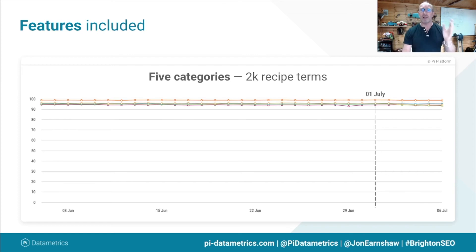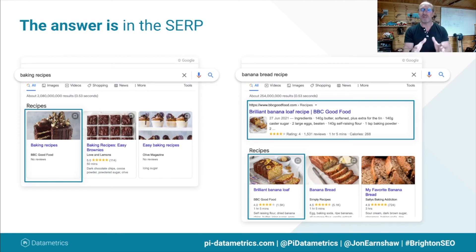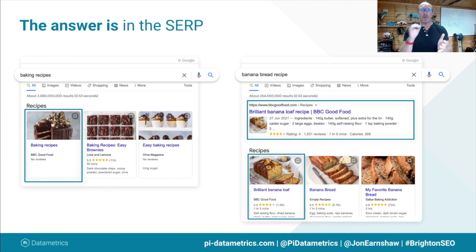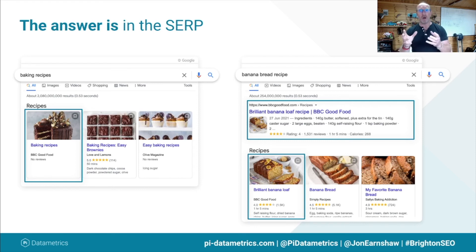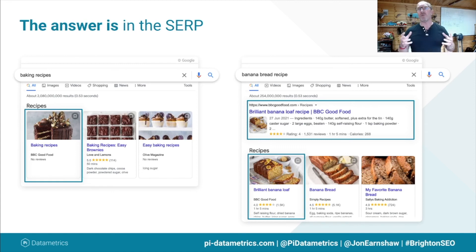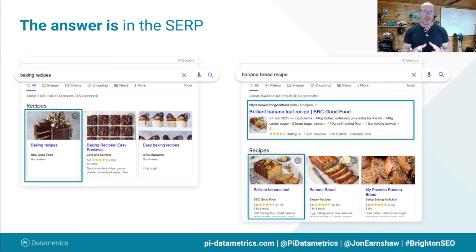Here are two screenshots of slightly different recipes — baking and banana bread. On the left, for baking recipes BBC Good Food, the organic position has been removed. On the right, the classic organic along with the recipe card. It turns out Google is on one day removing, adding, swapping — but always keeping at least one organic presence. This is SERP testing, intent testing at its finest. Don't get caught out by that — always include features when looking at your visibility and trying to work out if you've been penalized.